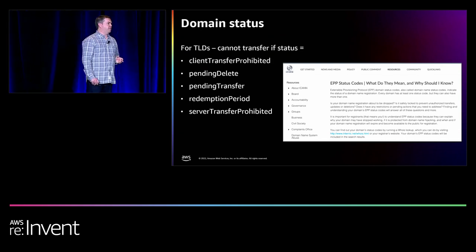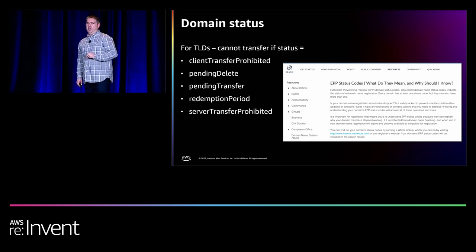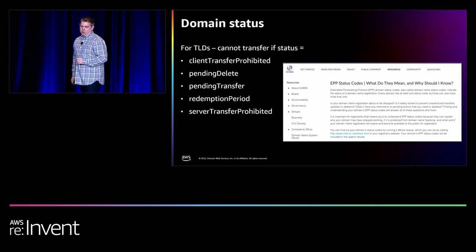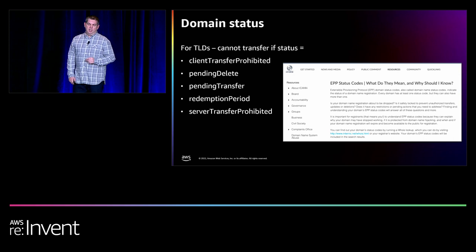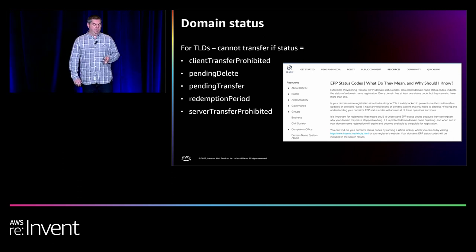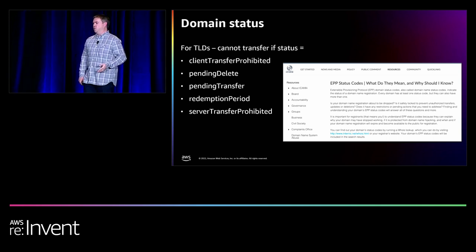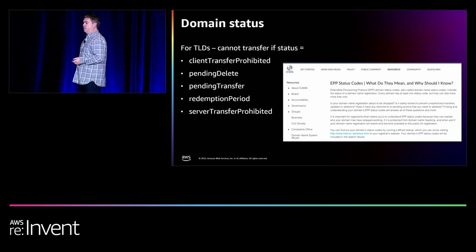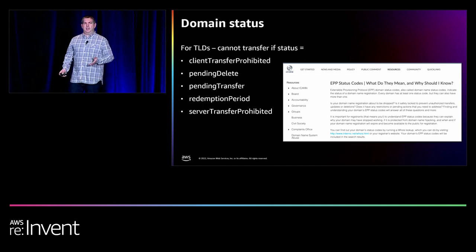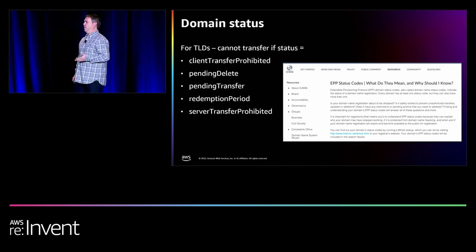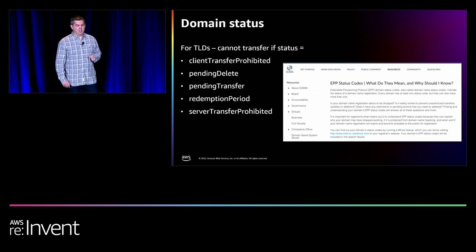There are a number of statuses that can be applied to a domain name registration. The ones particularly relevant for transferring into Route 53 include things like transfer-prohibited — meaning a flag has been set saying do not allow this domain name to be transferred, also known as domain name locking — and pending delete. If the domain name is expired and going to be deleted, the registry will not allow you to transfer it to Route 53. These statuses also show up when you do a WHOIS on that domain.